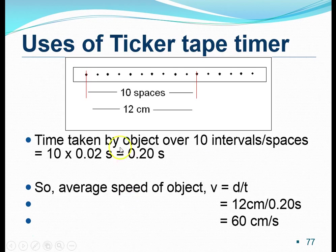This slide shows a common problem that is often faced by students. So over here we see that you are given a ticker tape with a certain pattern of dots, and some additional information is given. This information says that there are 10 intervals or there are 10 spaces that can be found from this red line to the one on the right-hand side. And the distance between these two red lines is actually found to be 12 centimeters. So how do we then solve the first problem? The first problem is simply this, the time taken by object over 10 intervals or 10 spaces. So how do we find this time?